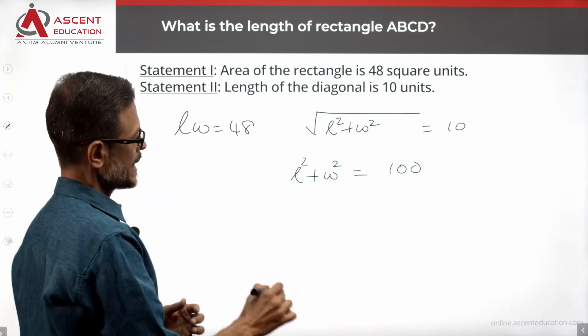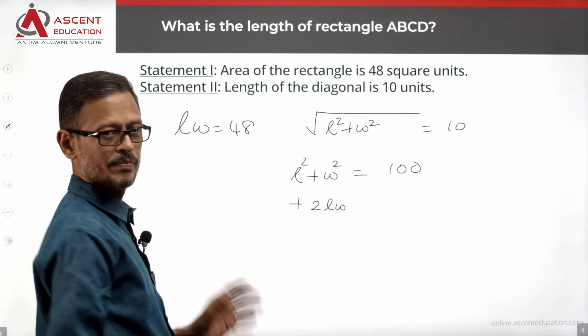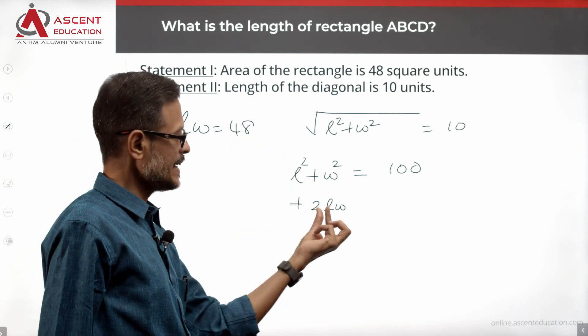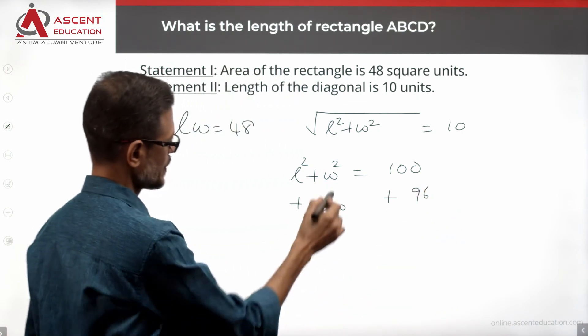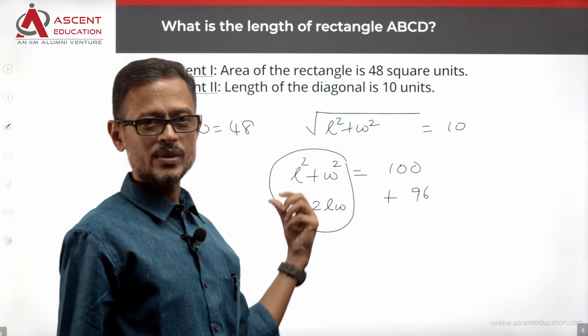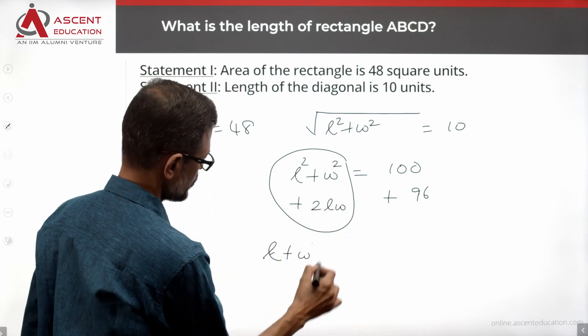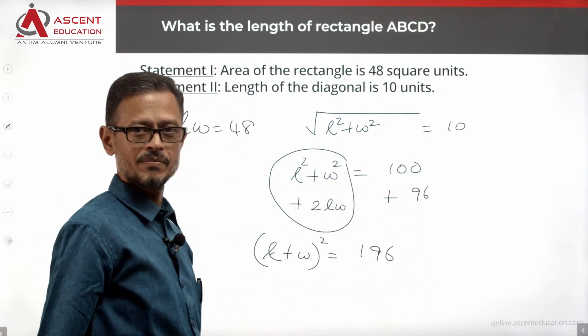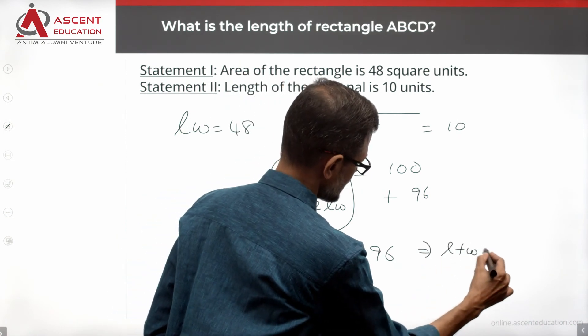We know that LW is equal to 48. So let's add 2 times LW to the left-hand side. If you add 2 times 48, that's equal to 96. So in the left-hand side, we have L square plus W square plus 2 times LW. This is nothing but L plus W the whole square. That is equal to 196. Taking the square root, L plus W is equal to 14.